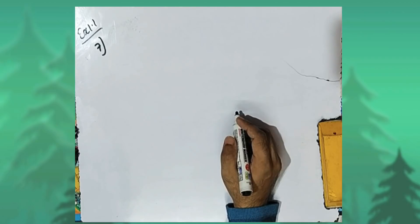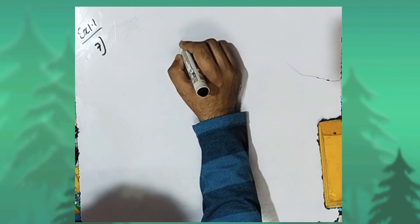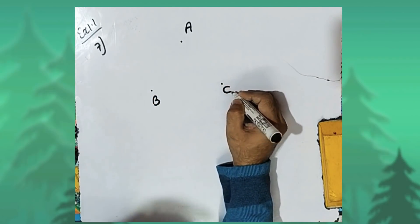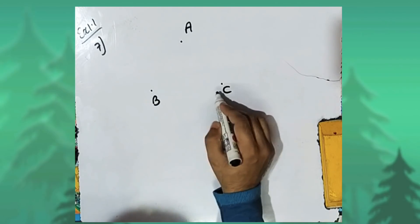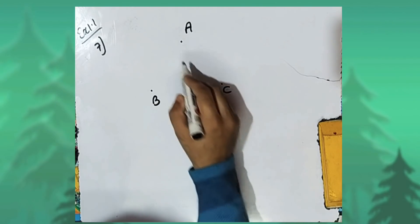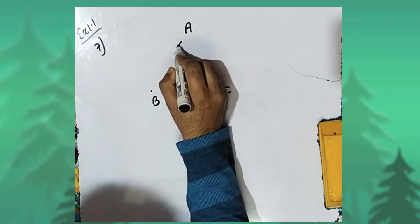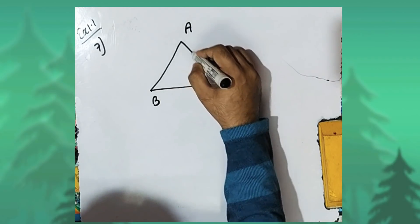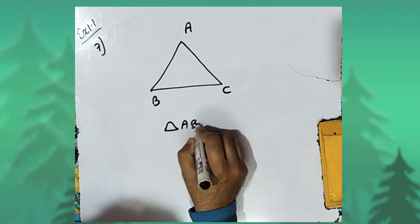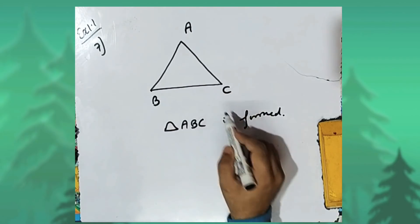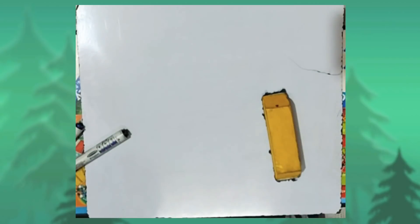In the seventh question, which figure is formed by three non-collinear points? Suppose we take three non-collinear points A, B, and C. Points that are not on a straight line are called non-collinear points. If we join points A and B, B and C, and A and C, then a triangle ABC is formed by these three non-collinear points. In the next video, we will be solving Exercise 1.2.